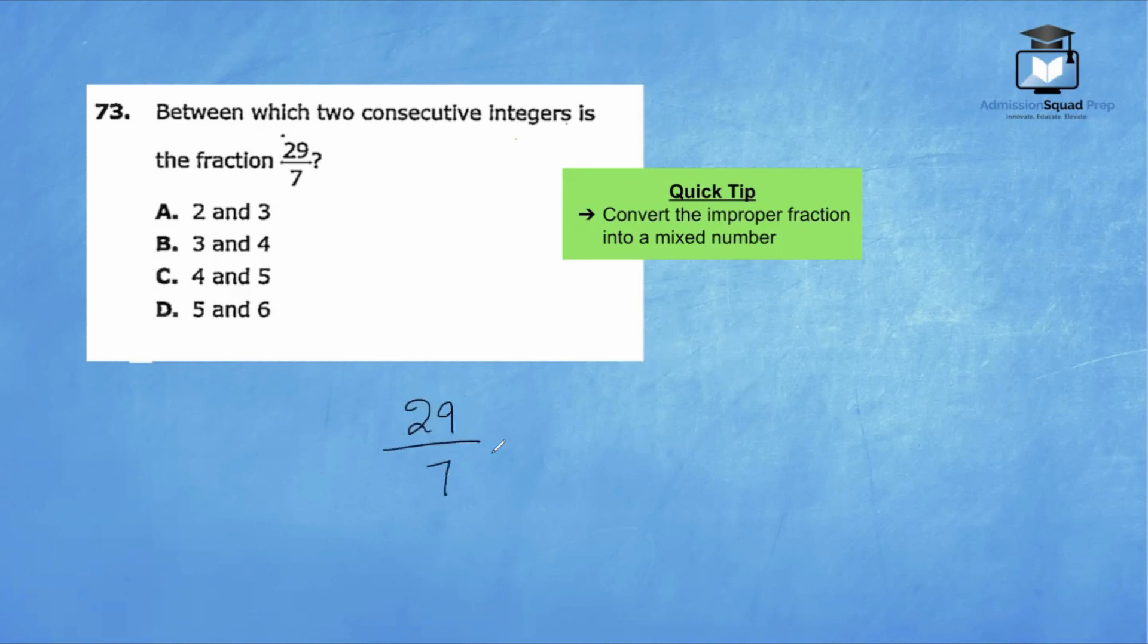So 29 divided by 7 is 4 and 1/7, right? Because 7 into 29 goes 4 times, 7 times 4 is 28, and the remainder is 1. So that becomes our numerator. So we have 4 and 1/7 because we're going to keep the denominator. And the question is between which two consecutive integers is this fraction? So 4 and 1/7 is going to be positioned right between 4 and 5 on a number line. It's going to be somewhere over here. So we know that our correct answer is choice C.